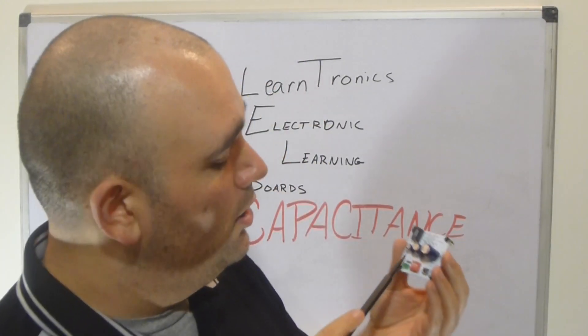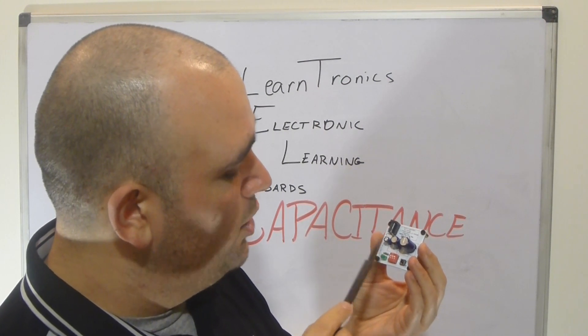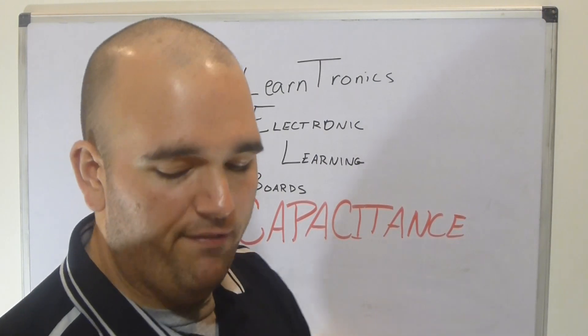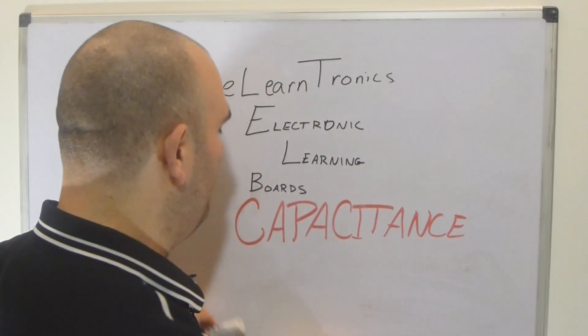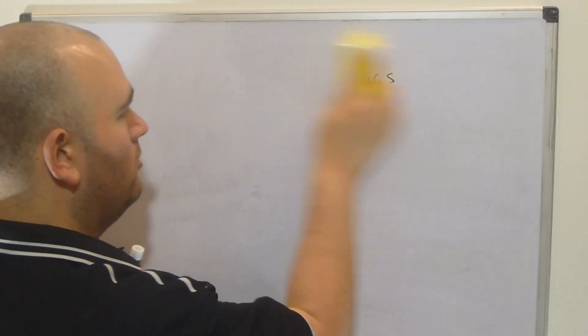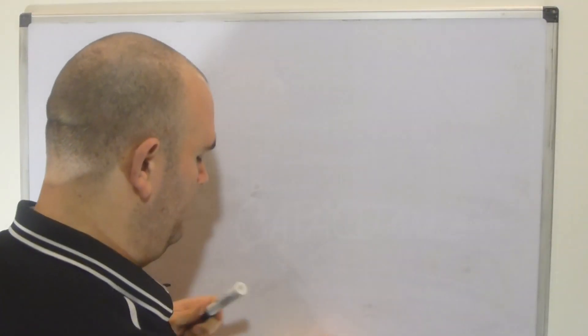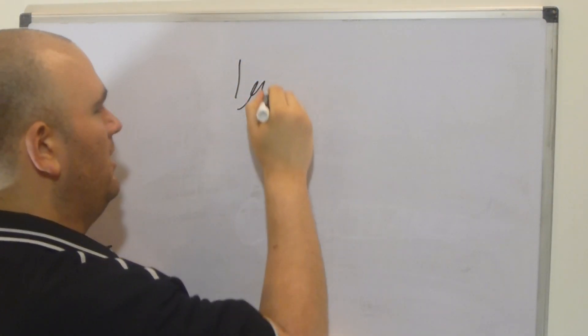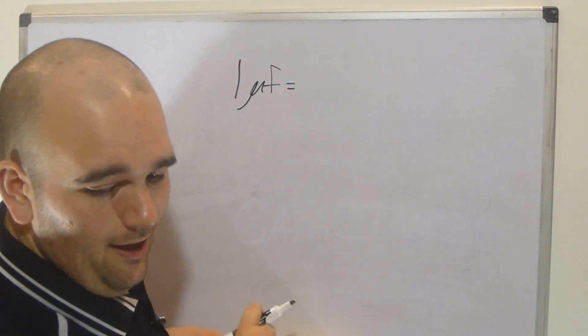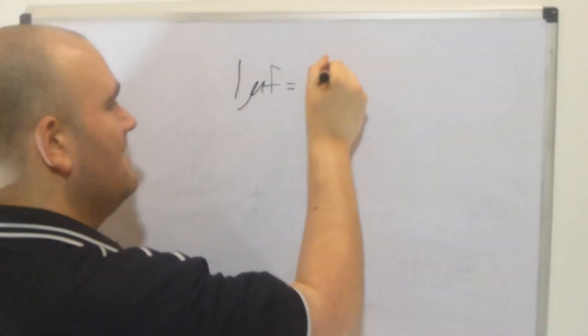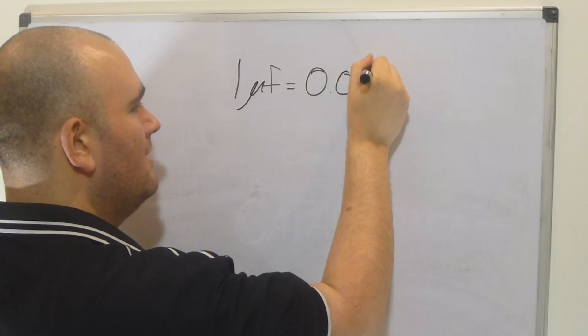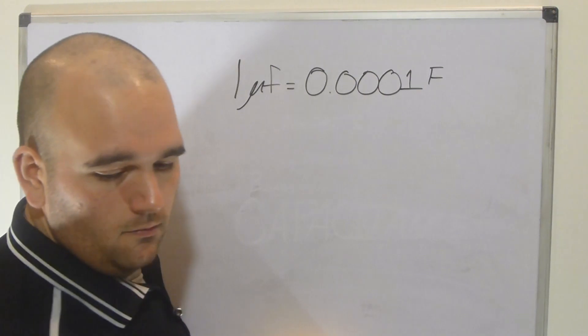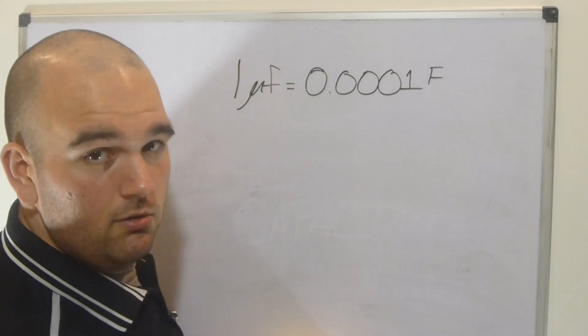Now with capacitors, you can read it right here on your board. We've got 100 UF. Well, that's actually a micro symbol. It's 100 microfarad. Now let's consider how little that is. Or rather, let's consider how much a farad is. 1 microfarad, 1 micro, it looks kind of like you, farad, is equal to 0.0001 farad. Okay, not much. Not much.